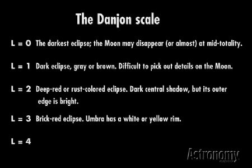If L equals three, the moon looks brick red and not dark at all. The umbra often shows a white or yellow edge.